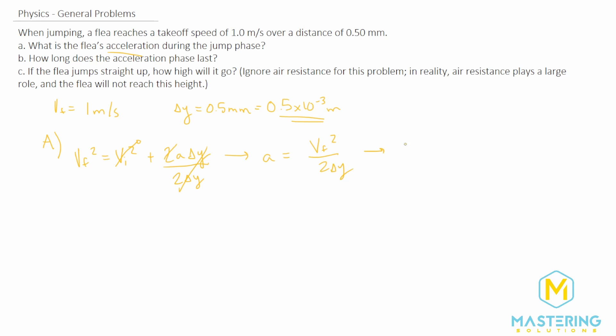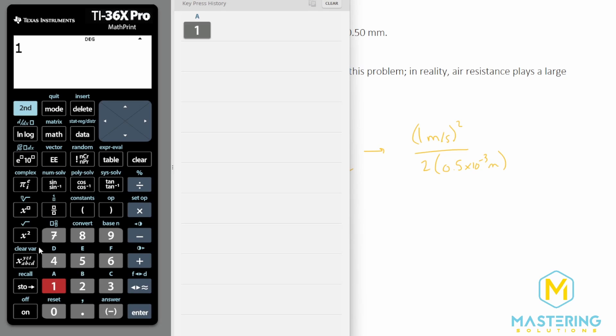Now we'll be left with acceleration equal to the final velocity squared divided by 2 times delta y. We can plug in our numbers to that, and the final velocity they tell us is 1 meter per second. That will be squared, and we'll divide that by 2 times the delta y of 0.5 times 10 to the negative 3 meters.